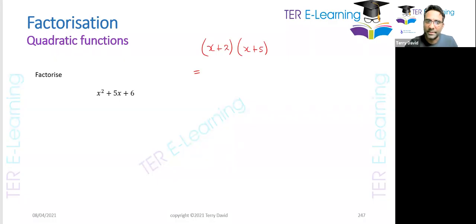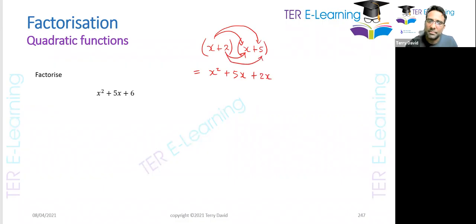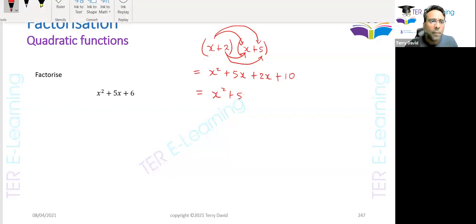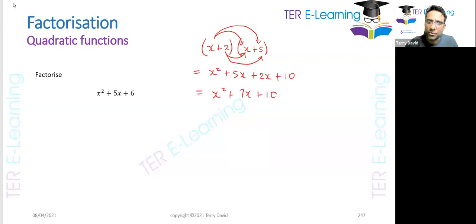I want to multiply this bracket. So I'm going to take my first term — x by x will give me x squared. Then x by plus 5 gives me 5x. Then I take this 2 and multiply by x, so I get plus 2x. And then 2 multiplied by 5 gives me plus 10. So when I simplify this, I get x squared plus 7x plus 10. So what I've done is multiplied these two brackets.